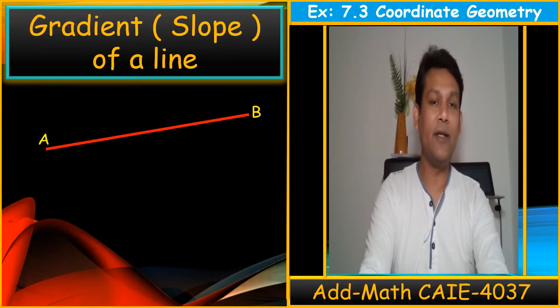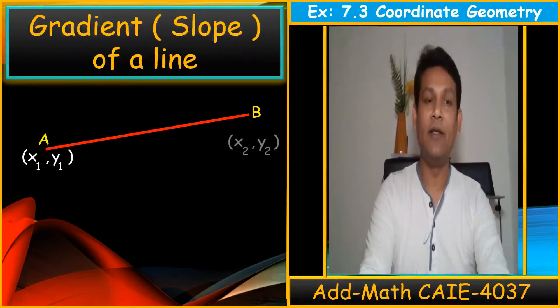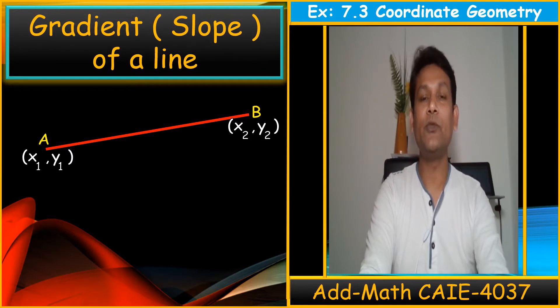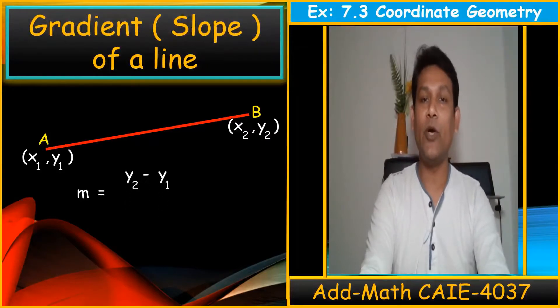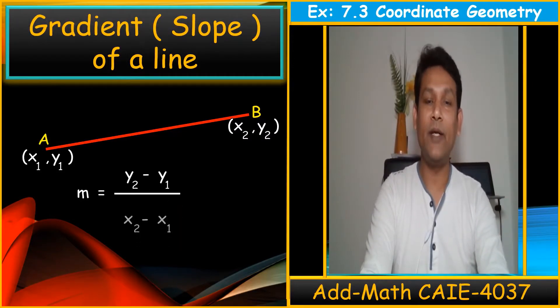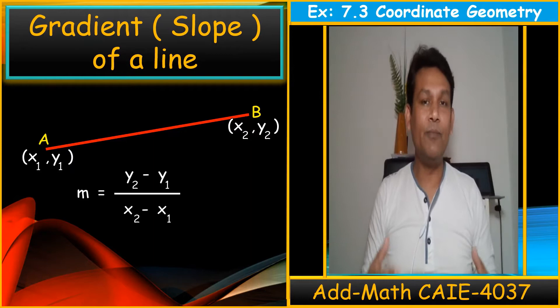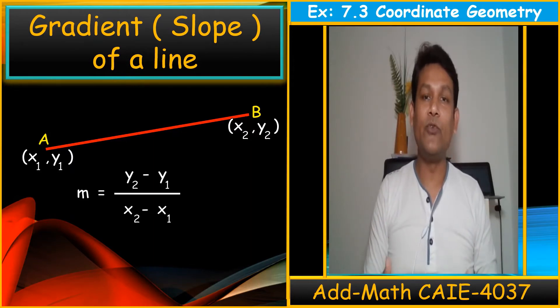You can see this line AB. When you want to find the gradient of this line, we should have the coordinates x1 y1, x2 y2. There is only a simple formula. This gradient normally is denoted by m. So m is equal to y2 minus y1 divided by x2 minus x1. This is a very simple formula we normally use to find the gradient or slope of a line.